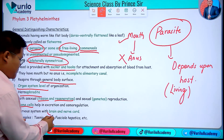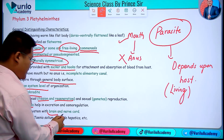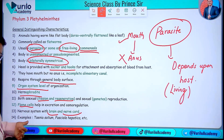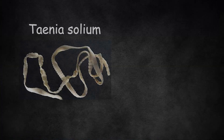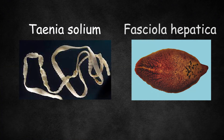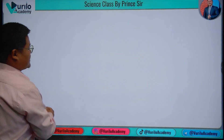There is also a nervous system developed. Examples of Platyhelminthes include Taenia solium and Fasciola hepatica.